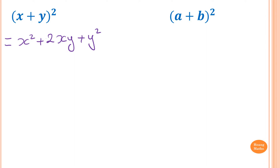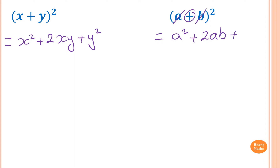To expand (a+b)² quickly: we square the first term to get a², then a times b is ab, and because it's a plus we add ab and double it to get 2ab, then add b². So the result is a² + 2ab + b².